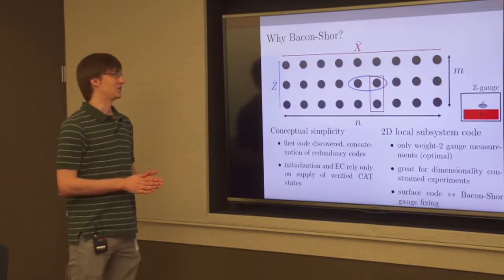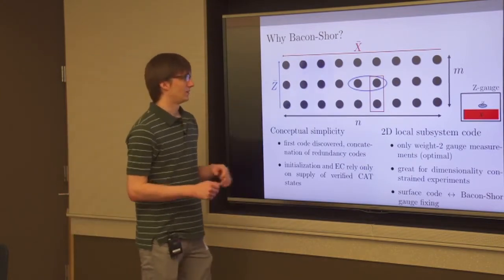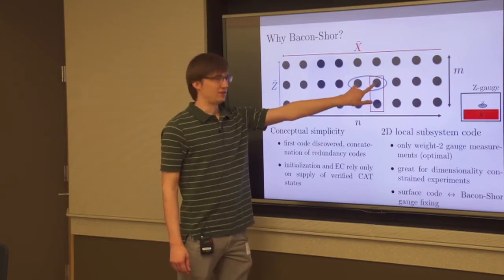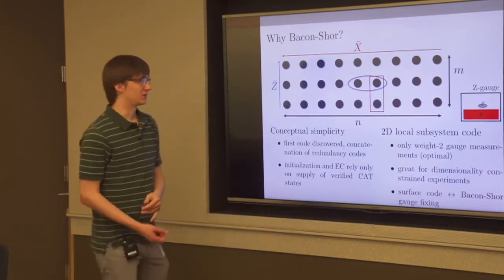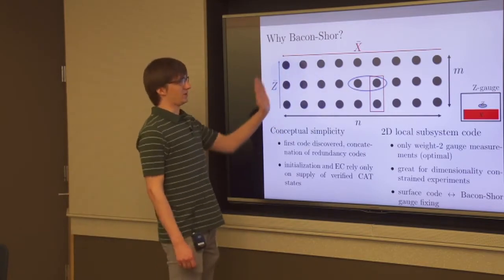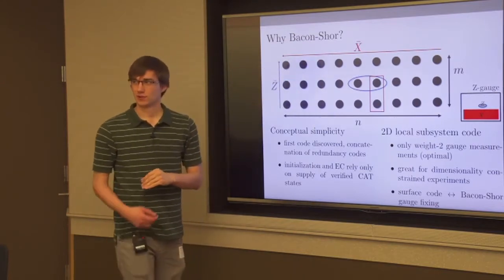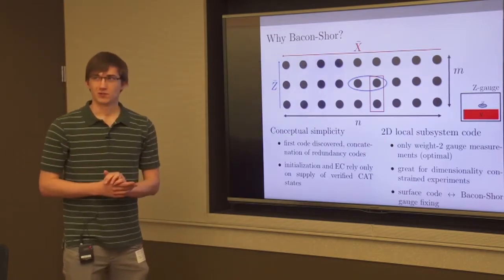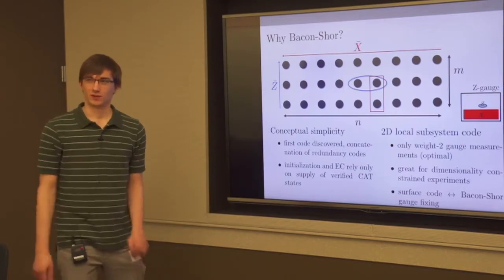Let's start with an introduction to Bacon-Shor codes. These are subsystem codes, so gauge operators are the important set. There are gauge operators of ZZ type between qubits in the same row and XX gauge operators between qubits in the same column. The logical operators are a string of Z Paulis along a column for logical Z, and a string of X Paulis along a row for logical X. This encodes one logical qubit. These codes are very simple — essentially the first code ever discovered, by Peter Shor in 1996.